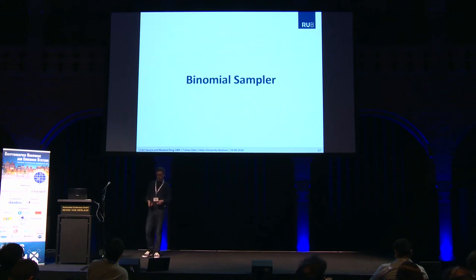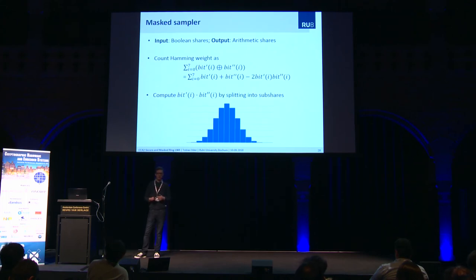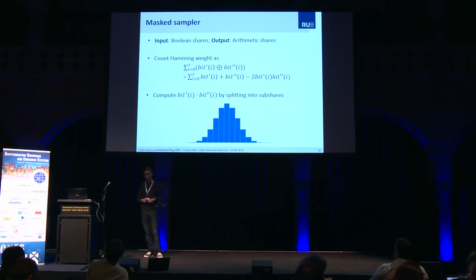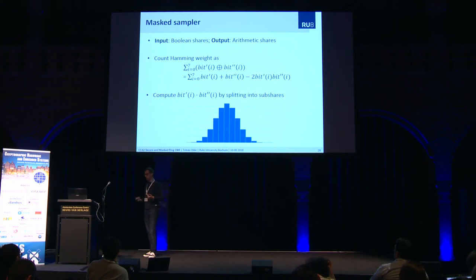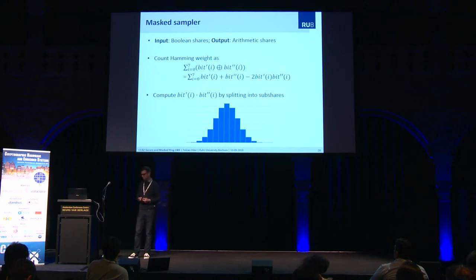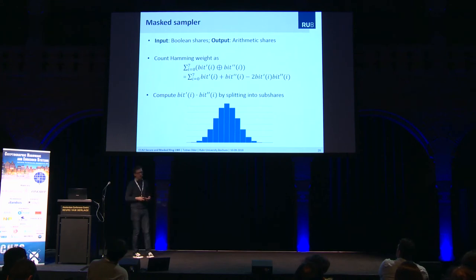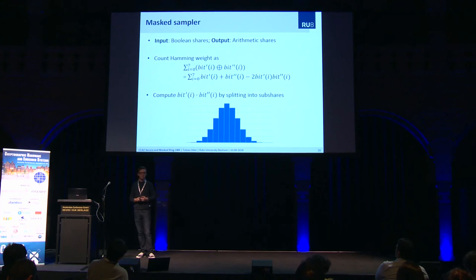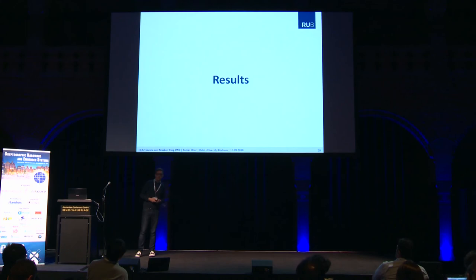The binomial sampler works by taking two bit strings, calculating the Hamming weight of both, and subtracting — the result is a binomial sample. To compute the Hamming weight securely with two shares, the naive approach of XORing the shares and summing the bits leaks information. Instead, we express the XOR operation in terms of arithmetic operations, assigning the first bit to the first share and the second bit to the second share. What remains is again an AND of two shares, which we compute securely by splitting into sub-shares, as done in the encoding.